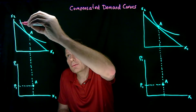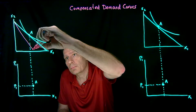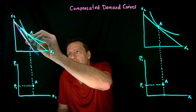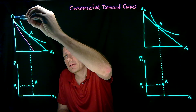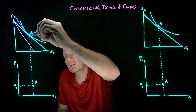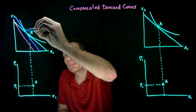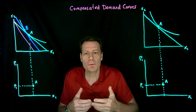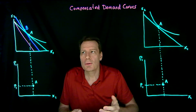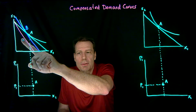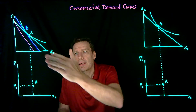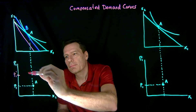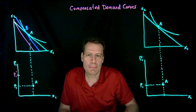We then increase the price and put in our substitution effect. We take that final budget and shift it parallel until the consumer reaches the original indifference curve, giving us point B. Then we use whatever we know about the underlying indifference map to locate where we end up on the final budget constraint. That gives us point C, which we bring down at the higher price P1', giving us a second point for our demand curve.